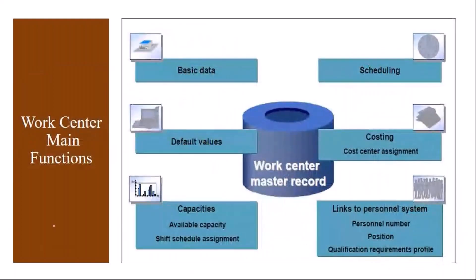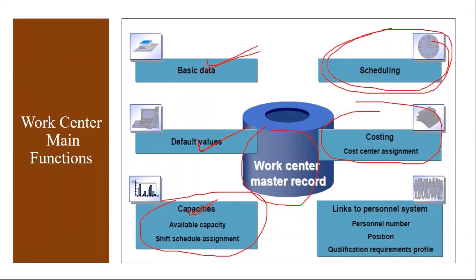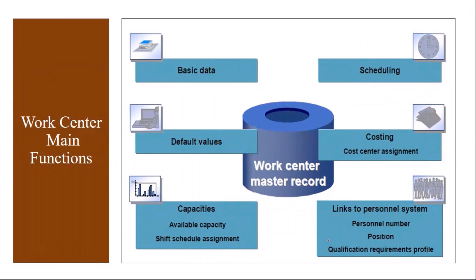The data in the work center is maintained in several sections. You maintain some data in the basic data section, some in the default values section, and in the capacities tab you maintain capacity-relevant information. In the scheduling tab you maintain scheduling-relevant information, and in the costing tab you maintain the cost center and activity type. If you want to link it with HR to know who the technician is, you can link it to the personnel system as well. I will show you this in the system.